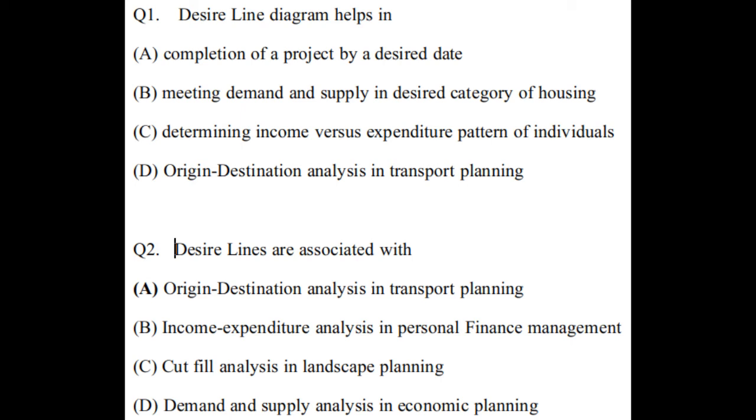Option B: Meeting demand and supply in desired category of housing. Option C: Determining income versus expenditure pattern of individuals. Option D: Origin and destination analysis in transport planning.